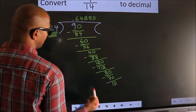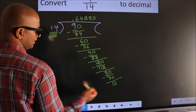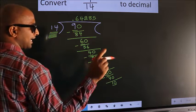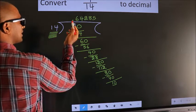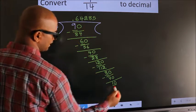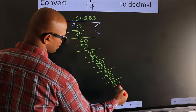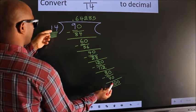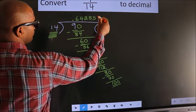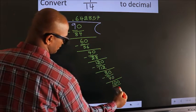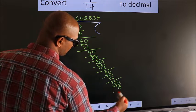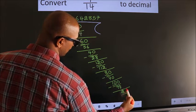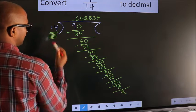Here we have 10 and here 14. 10 is smaller than 14, and we already have the decimal, so we can directly take 0. So we have 100. A number close to 100 in the 14 table is 14 × 7 = 98. Now we subtract. We get 2.